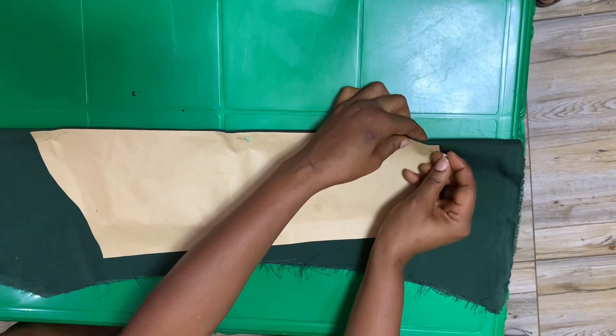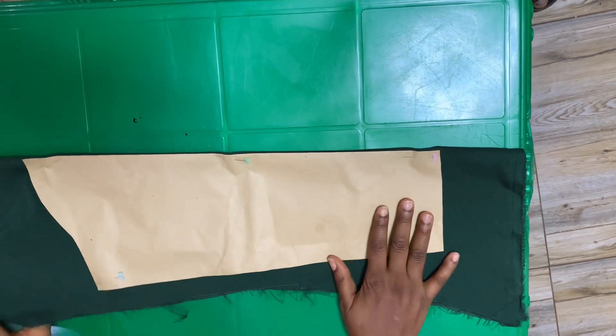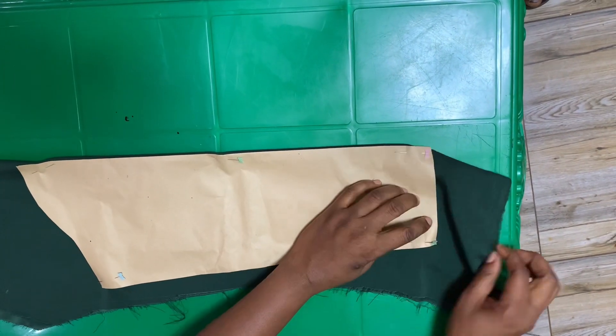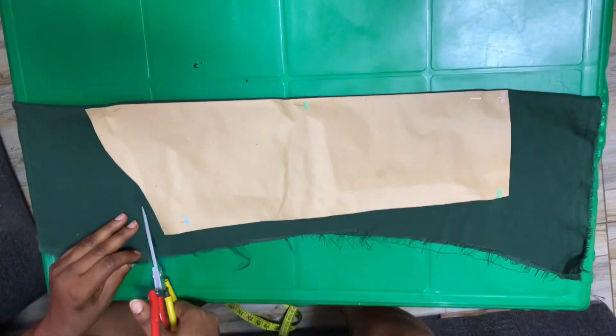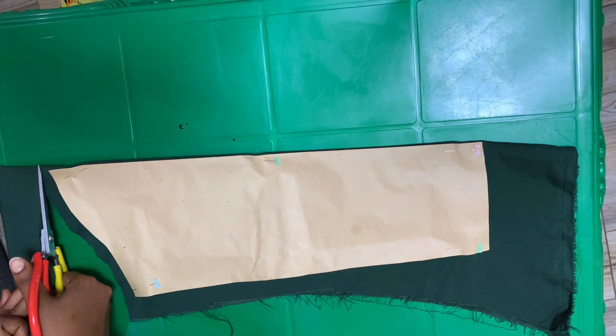After you pin it, remember we will add allowance now. You can cut out half an inch allowance for all the sides. You see, to draft a sleeve is a very easy thing.